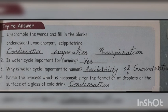First, unscramble the words and fill in the boxes. The answers are: first one is condensation, second one is evaporation, third one is precipitation. Second question: is the water cycle important for farming? Yes. Third question: why is the water cycle important to humans? The answer is availability of groundwater and agriculture. Fourth one: name the process responsible for the formation of droplets on the surface of a glass of cold drink. That is condensation.